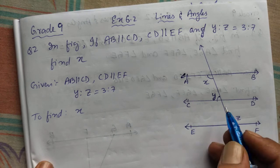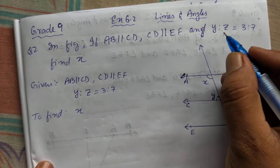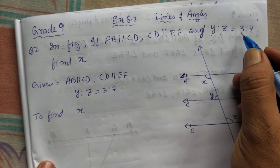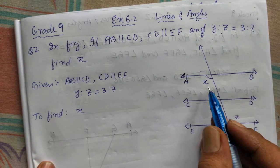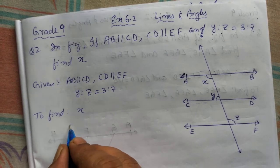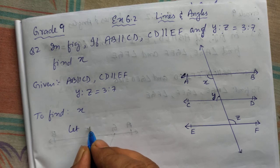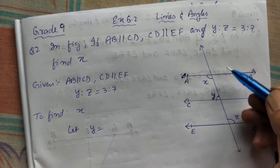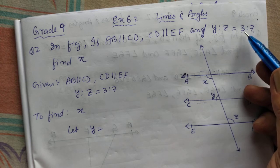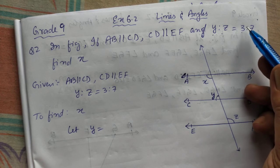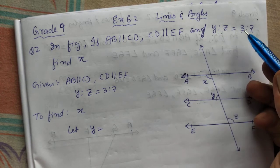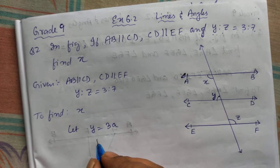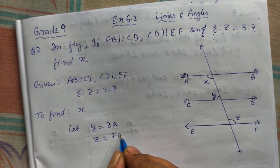And y is to z is given as 3 is to 7. We're going to find x. We'll consider, let y equal to, since x is already given here, we can use another alphabet. Whenever they give in ratio, we have to take with the alphabet. So y equal to 3a we'll take.